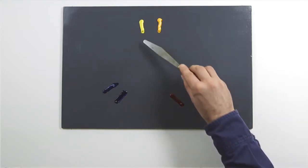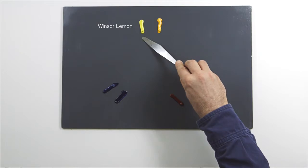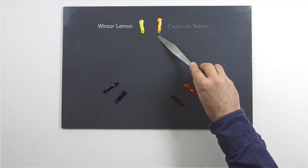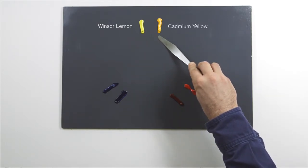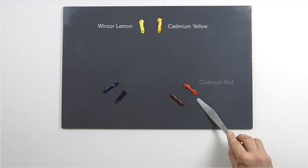Starting with the yellows, you can see the Winsor lemon has a green bias whereas cadmium yellow has an orange bias, as does cadmium red.